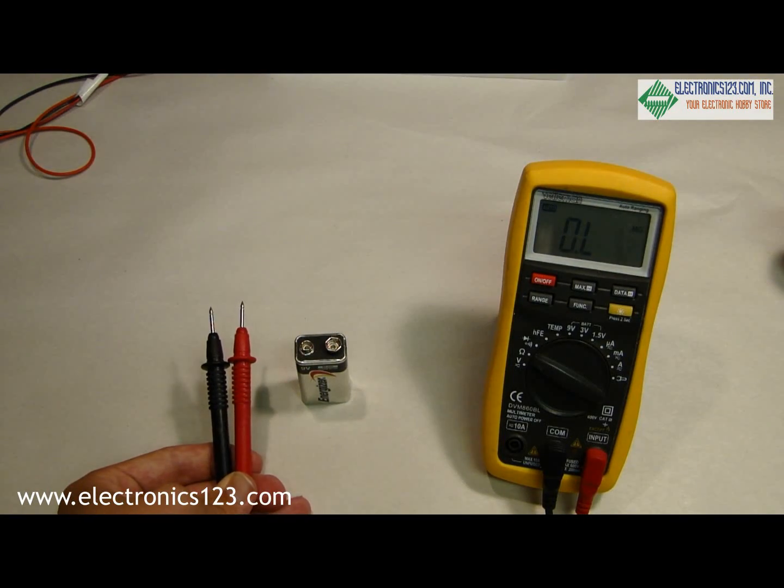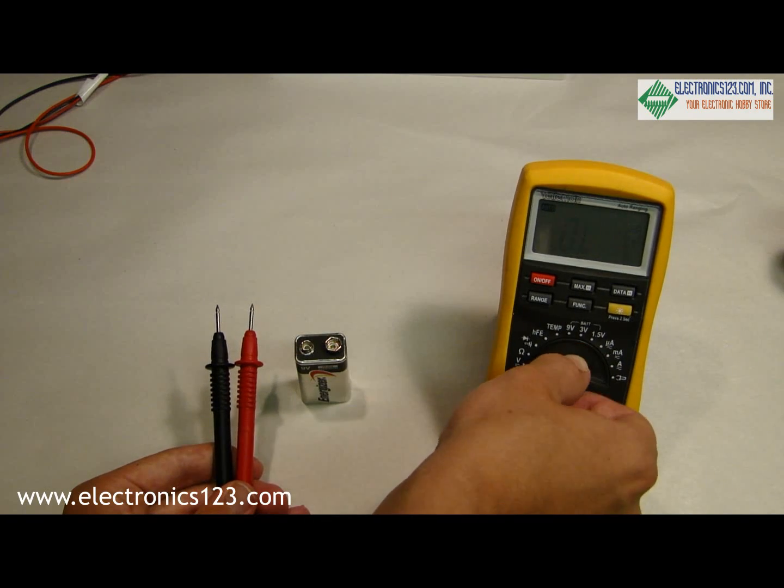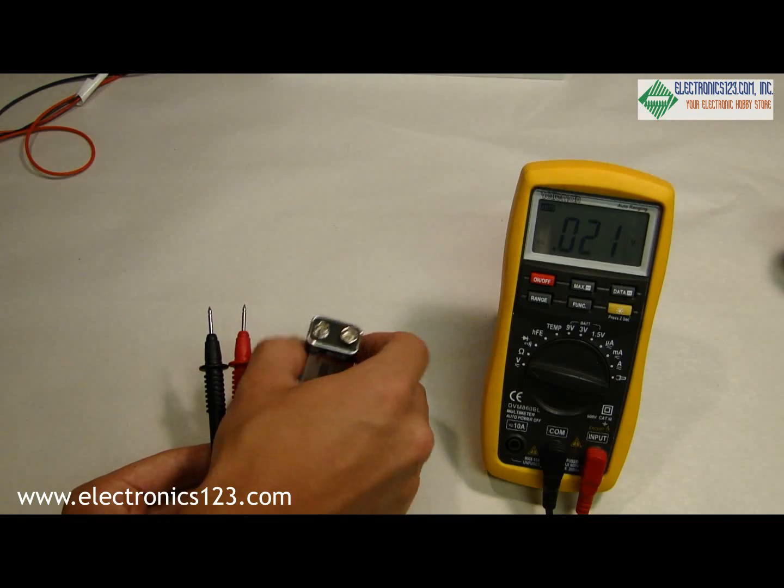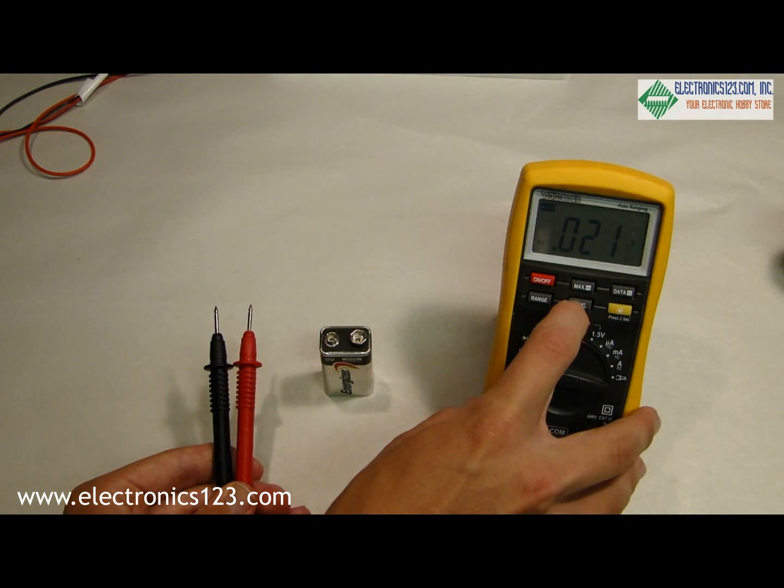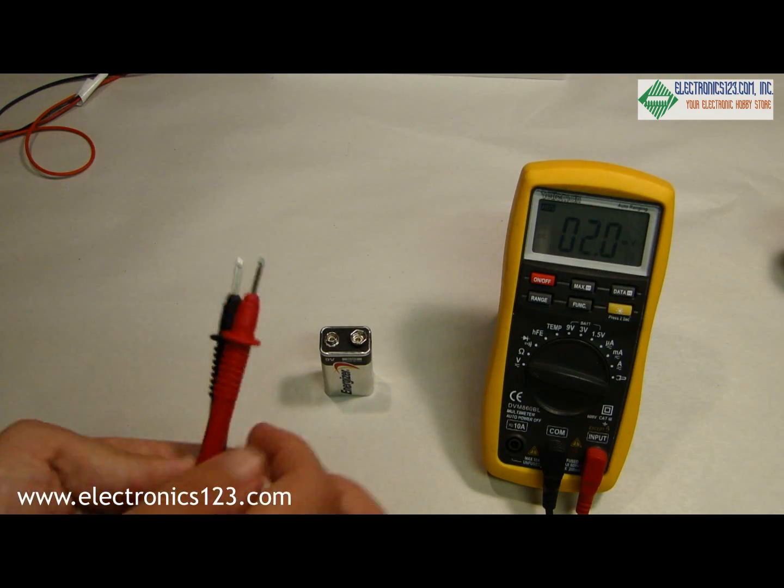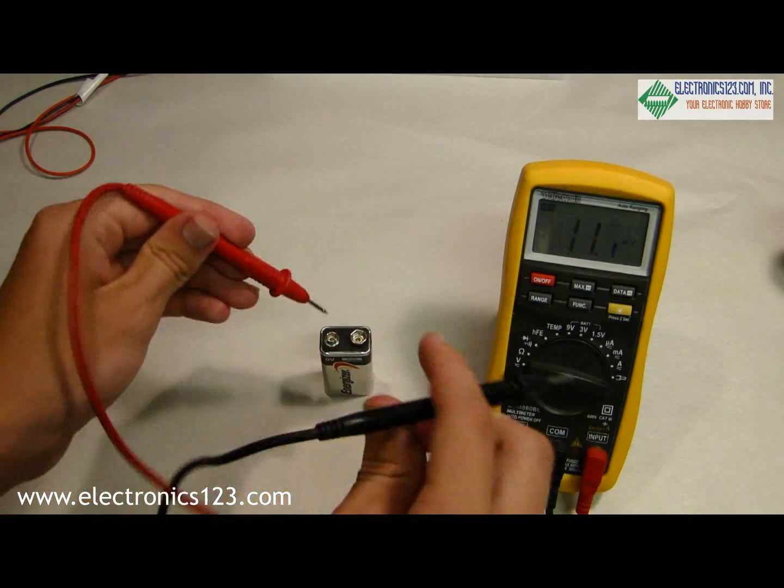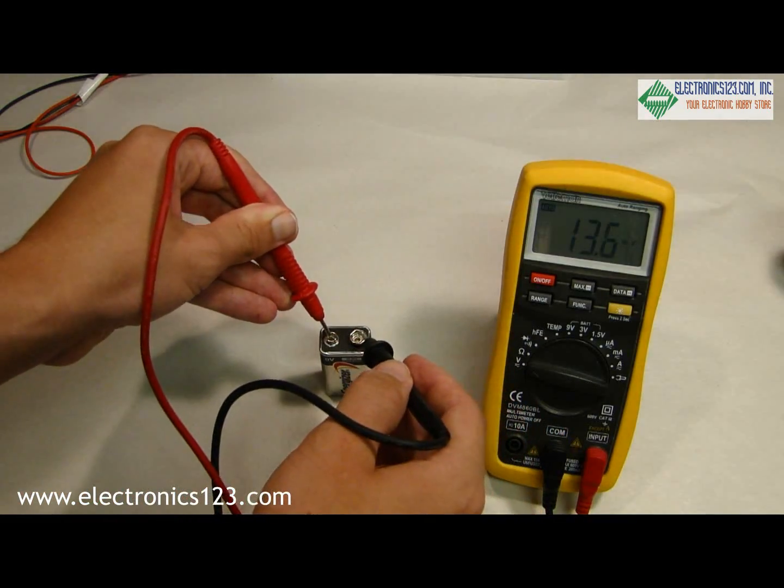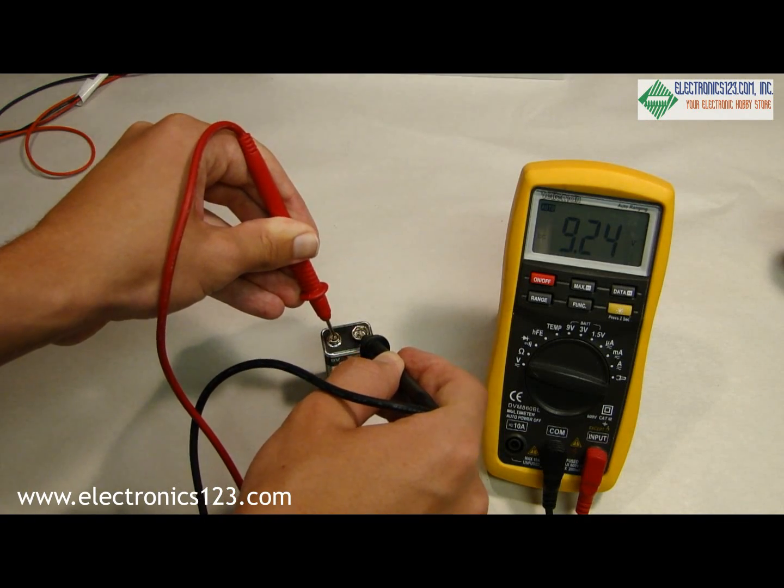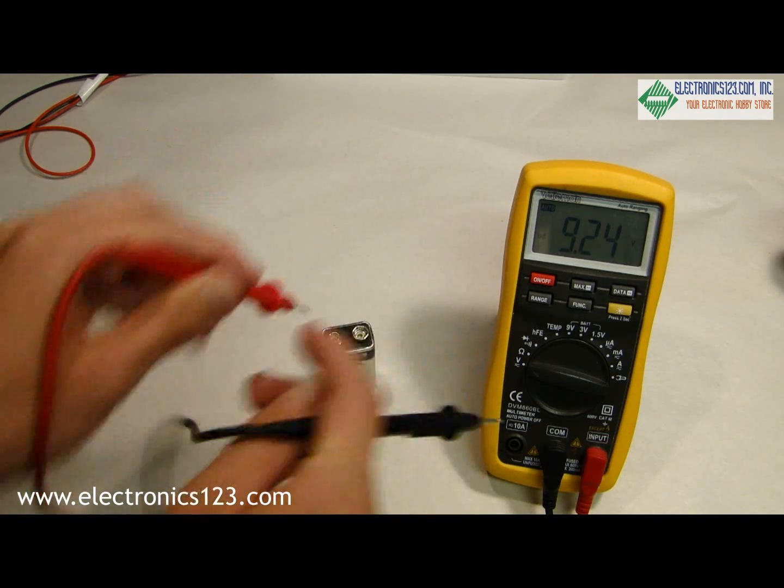One of the most common uses for a multimeter is to check voltages. To do this we select the V on the turn knob and make sure, because we're using a DC power supply, to switch the function to DC. Connect the positive probe or the red probe to the positive and we're reading 9.24 volts out of this 9 volt battery.